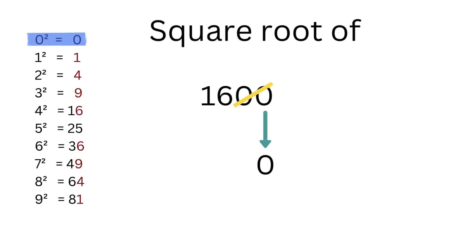We now want to find the square that's closest to 16 without exceeding 16. In this case, 4 squared is equal to 16 exactly. So we will write the digit 4 here. Thus the answer is equal to 40.